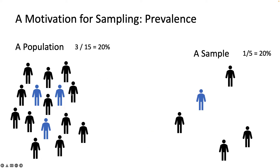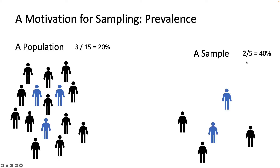What we typically do is take a random sample. The simplest example is just randomly picking five of the population of 15. This is a situation where we got lucky — the prevalence in our sample is one in five, which is still 20%. But it's totally possible we could have gotten less lucky, resulting in an overestimation of the disease in that population.